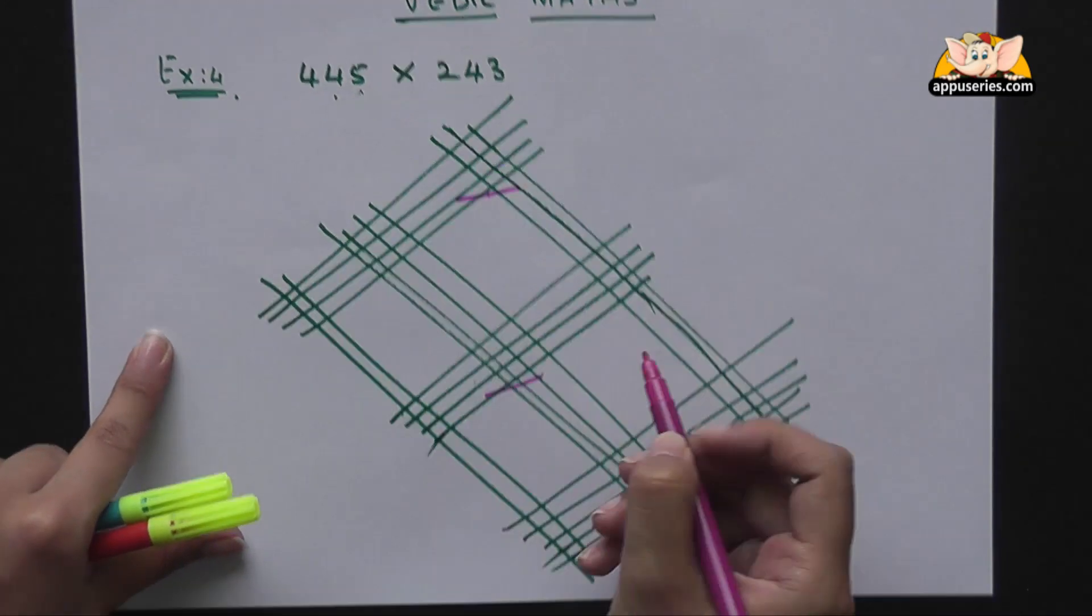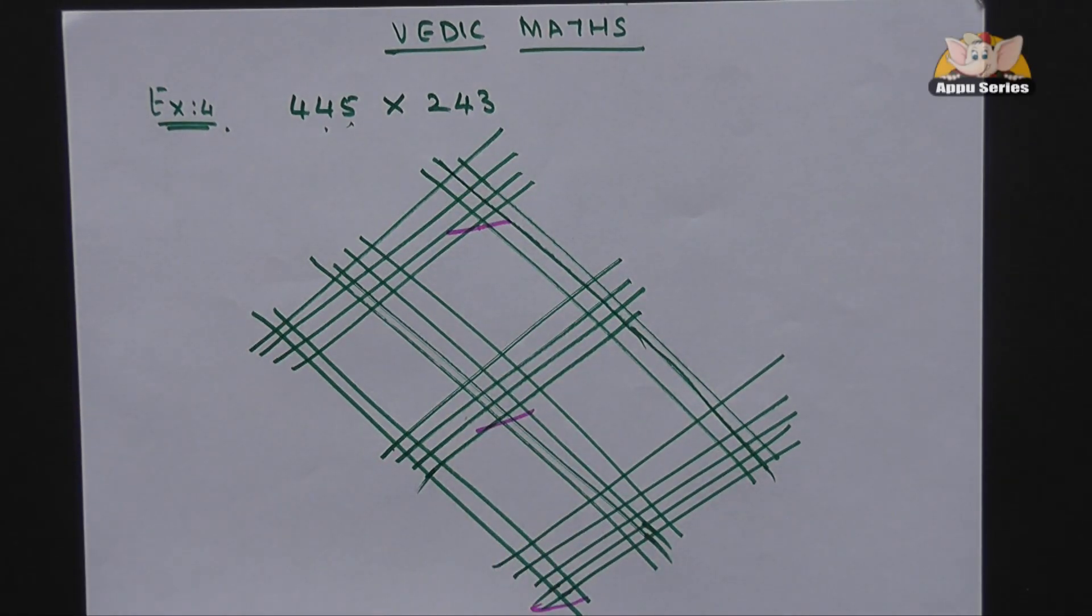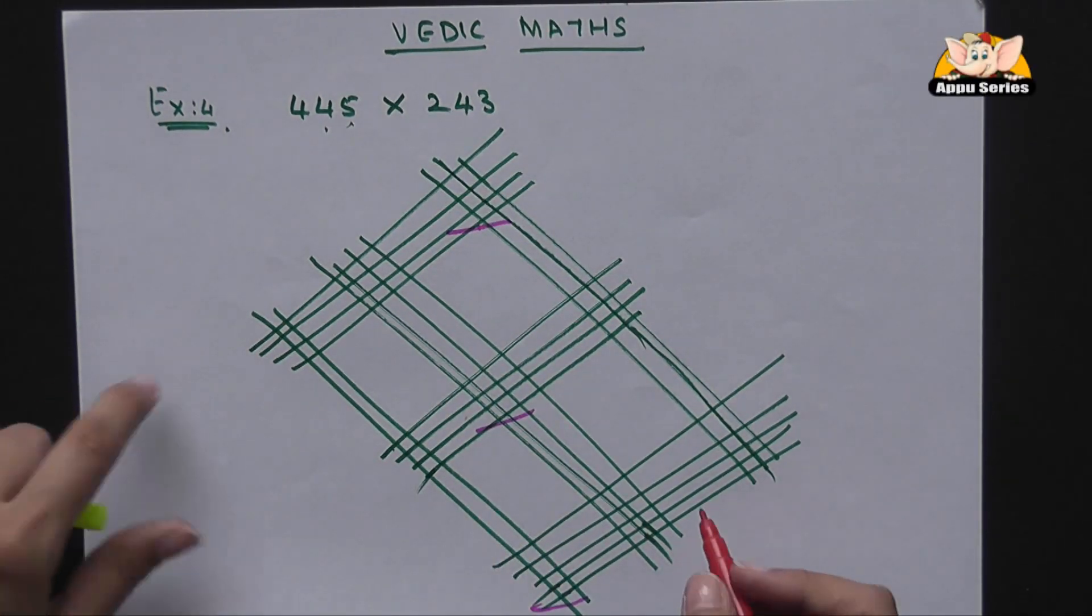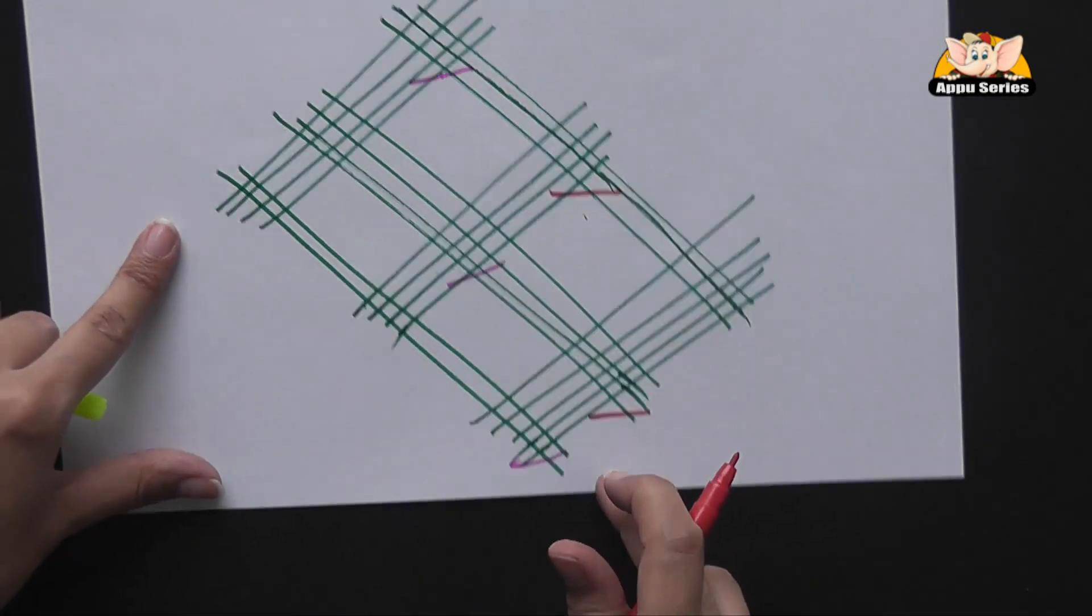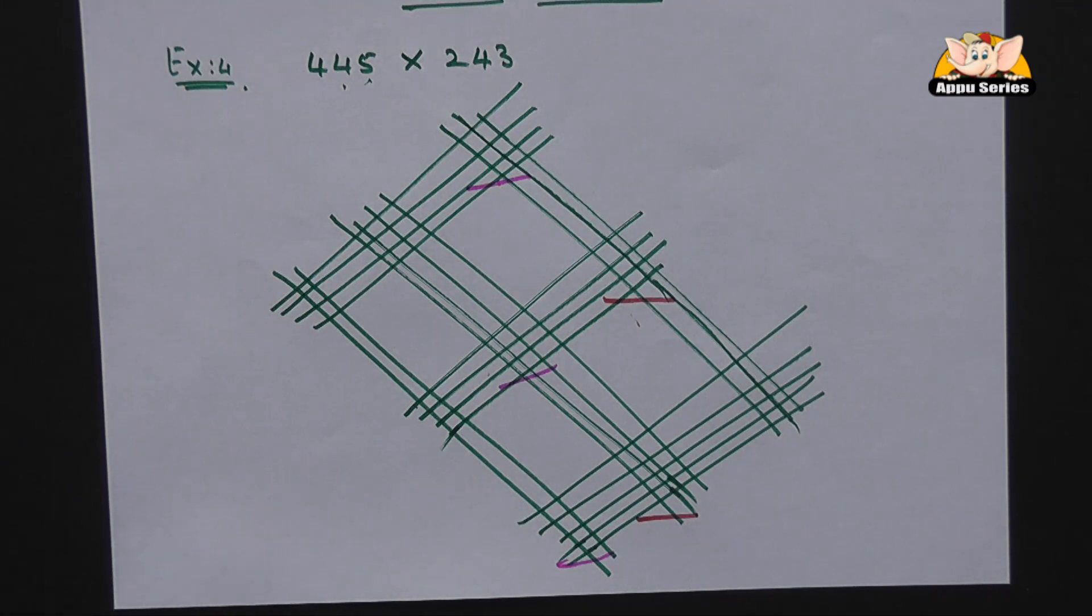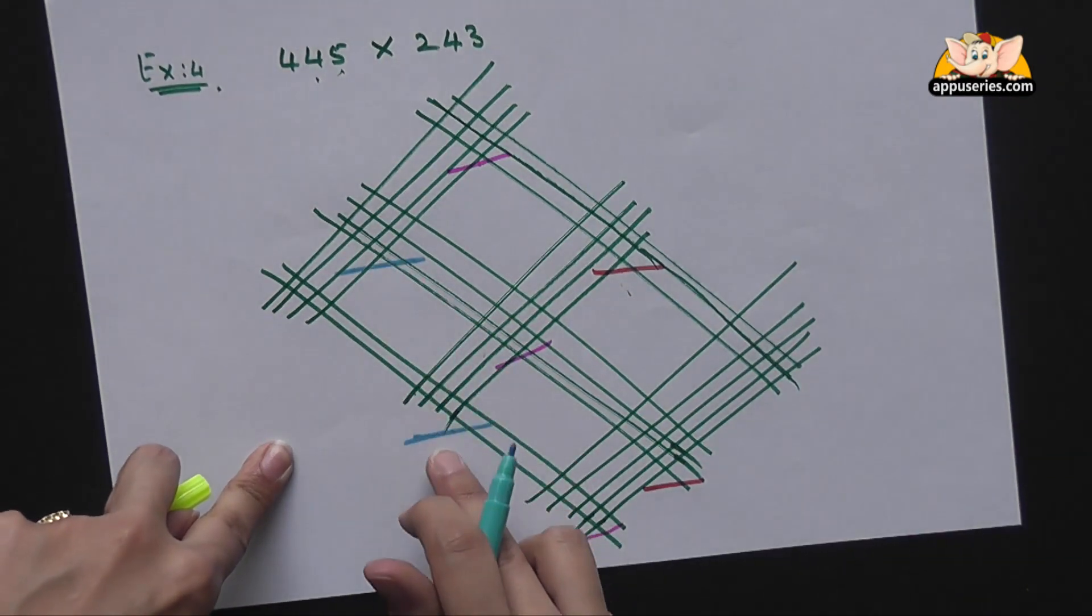Ok, now the intersecting points of these 3 sections will be added together. Then this bunch and this one will be added together. Likewise, these 2 sections will be added together.